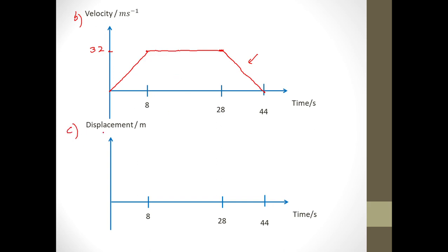The displacement-time graph requires calculations — you need to find the total displacement for each part. Displacement from a velocity-time graph equals the area under the graph. For the first triangle: area = ½ × 8 × 32 = 128 meters. For the rectangle in the middle: 20 × 32 = 640 meters. For the last triangle: area = ½ × 16 × 32 = 256 meters. These three areas represent the displacement for each phase of motion.